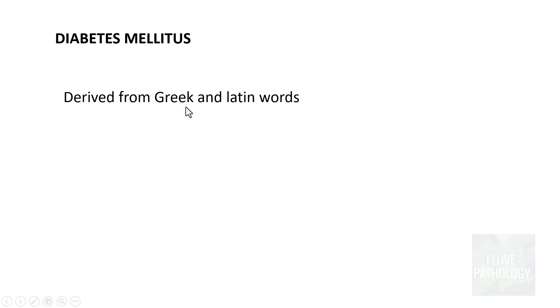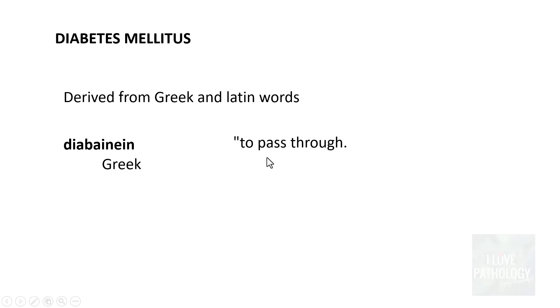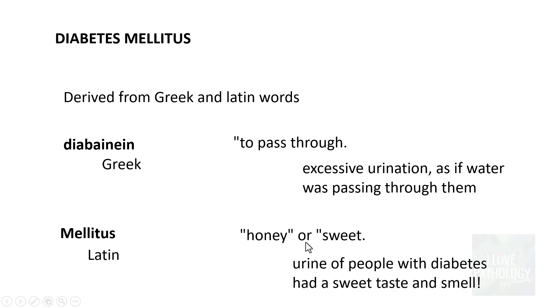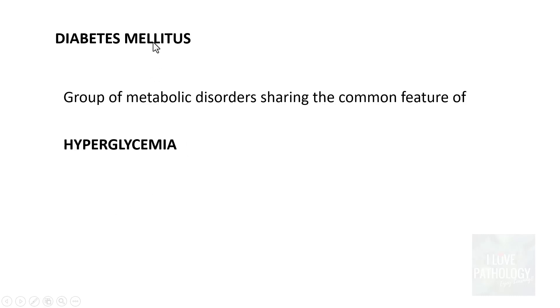Now, what is diabetes mellitus? Let's learn about the origin of the word. It is derived from two words — one Greek, one Latin. 'Diabetes' comes from the Greek word 'diapineen,' meaning 'to pass through,' referring to excess urination. 'Mellitus' is a Latin word meaning 'honey' or 'sweet,' because the urine of people with diabetes had a sweet taste and smell. That's how the name diabetes mellitus came to be.